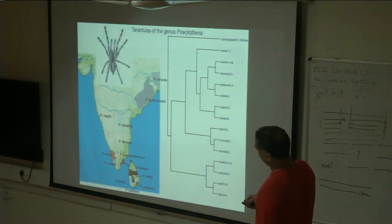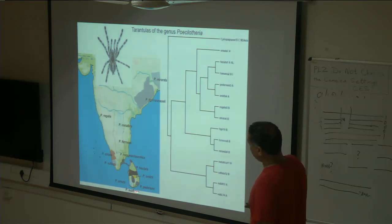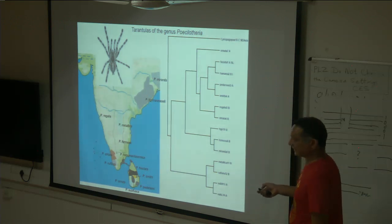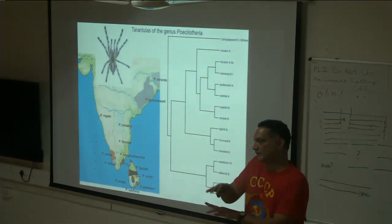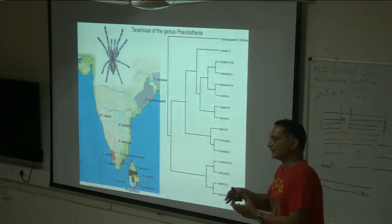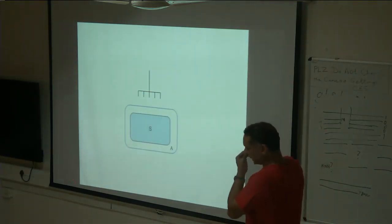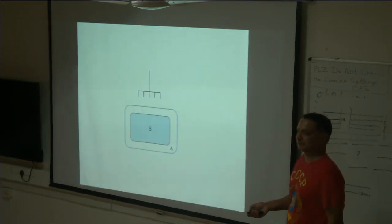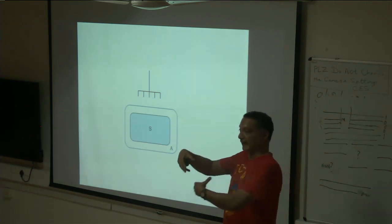A real-life example is that of tarantulas of the genus Poecilotheria — about 13 species, each with a certain distribution: five species in Sri Lanka and eight in India. Here's the phylogeny. Now you can start asking: do the Sri Lankan ones cluster together, the Indian ones cluster together, or are they intermixed? Did they go from India to Sri Lanka? Was there dispersal from Sri Lanka into India? These are the kinds of questions addressed in historical biogeography.